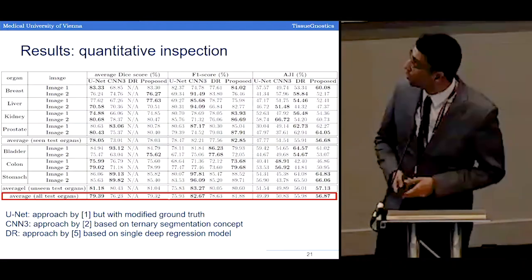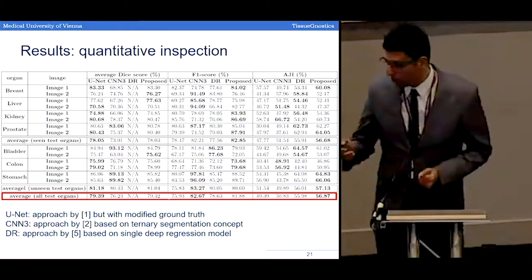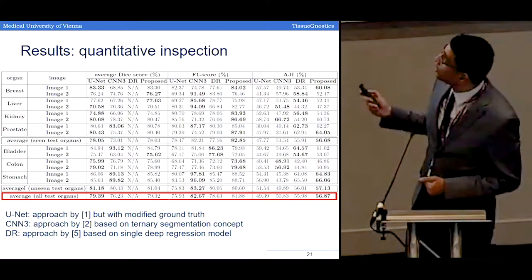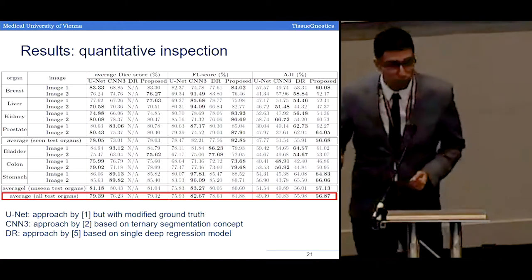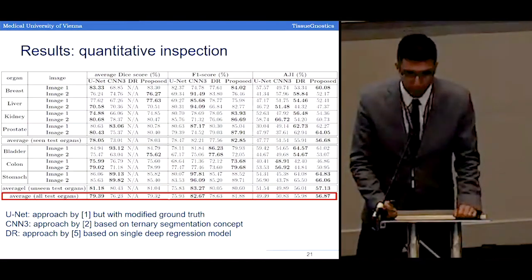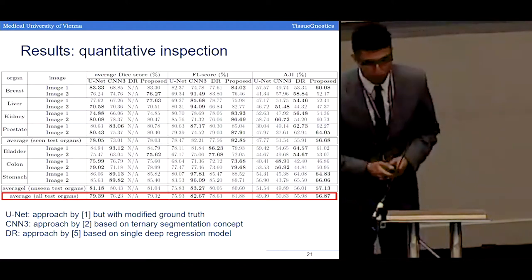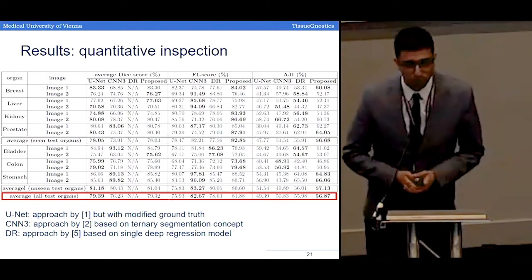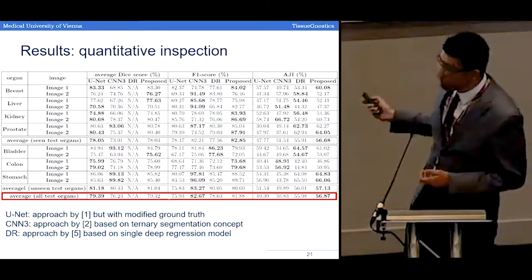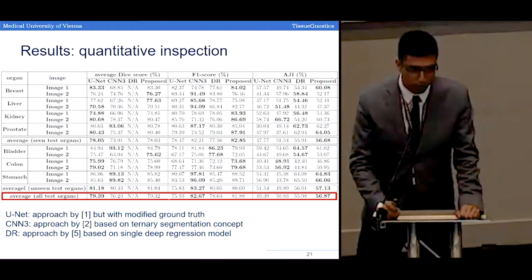Finally, we come to the results. This slide shows results for all 14 validation images. I focus on the last line, which is the average overall results. We use three evaluation indices: the DICE score, the F1 score, and the aggregate Jaccard index. The aggregate Jaccard index is most important because it is sensitive to both semantic and instance segmentation performance. Comparing with three other algorithms — UNet, the Kumar reference paper, and a recently published single depression model — we had five to seven percent improvement compared to the first two models, and around one percent improvement compared to the single regression model.